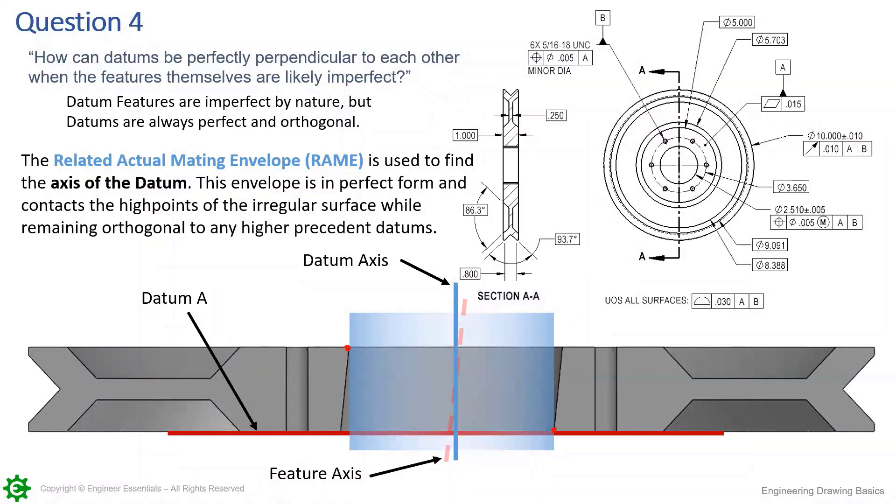Now from this envelope, this envelope is a cylinder, it's expanding, it's going to hit those high points and create a datum axis. So this datum axis is different than this datum feature. So everybody see that? We're no longer using the feature axis.